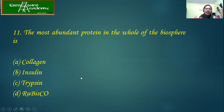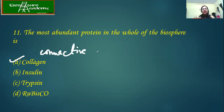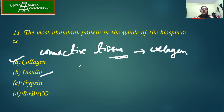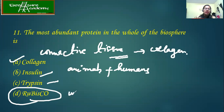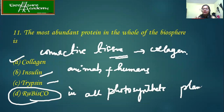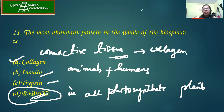The most abundant protein in the whole biosphere. Collagen is present wherever connective tissue is found in humans and animals. Insulin and trypsin — again found in animals and humans. Rubisco is present in all photosynthetic plants. Comparing which is more abundant on Earth — animals, humans, or plants — the obvious answer is plants. Hence the answer is rubisco, the most abundant protein in the whole biosphere.